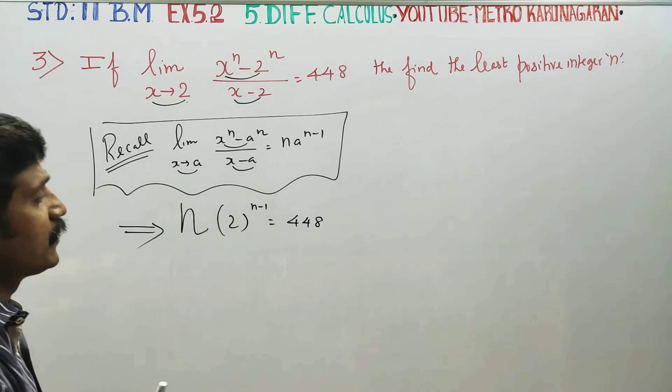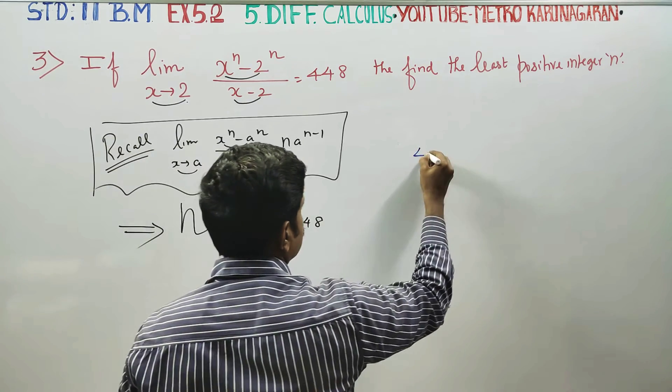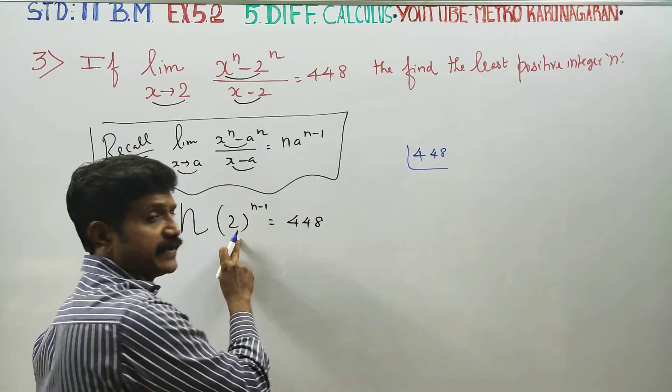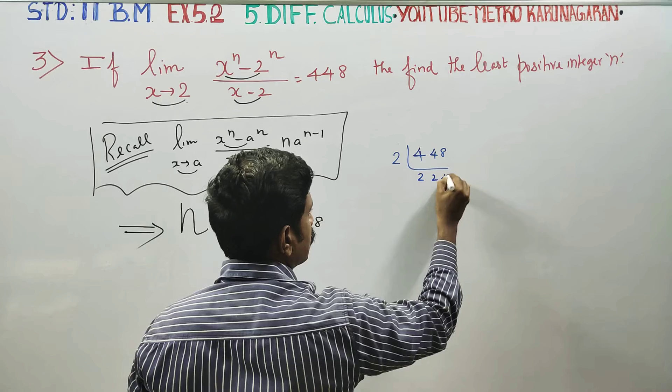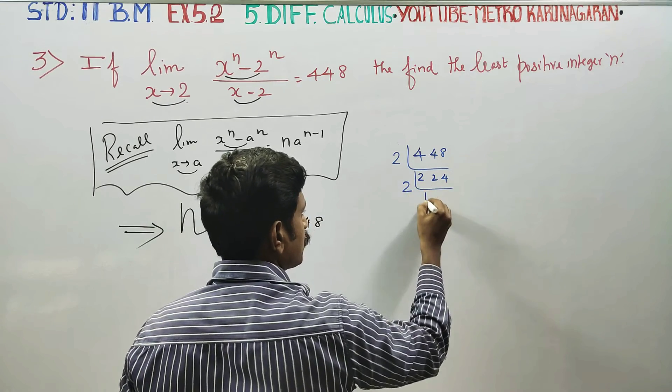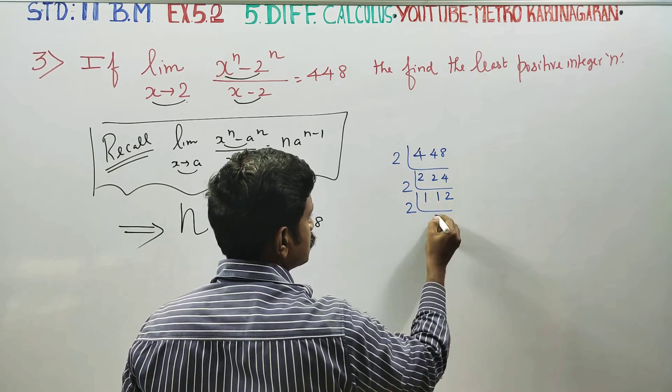We'll break down 448 using powers of 2 as the main base. Dividing by 2 repeatedly: 448 divided by 2 is 224, divided by 2 is 112, divided by 2 is 56, divided by 2 is 28.